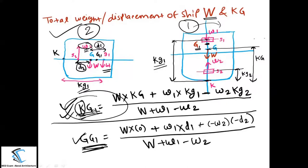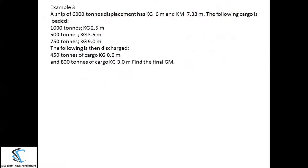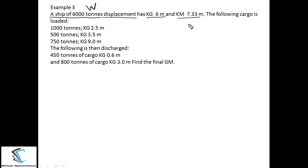That is a great advantage of taking the moment about the keel. In upcoming classes I am going to use this formula — KG1 — taking the moment about the keel only. I hope all of you understood this methodology for calculating the vertical shift of the center of gravity from the keel. Let us take one numerical. A ship of 6000 tons displacement has KG = 6 meters.